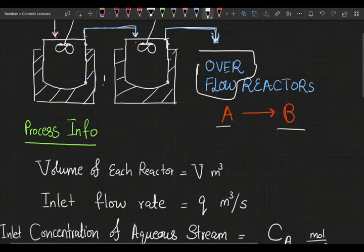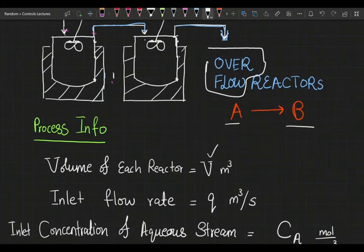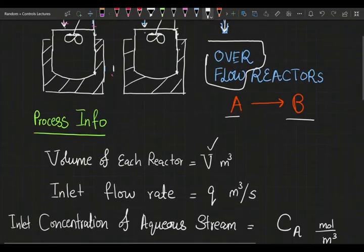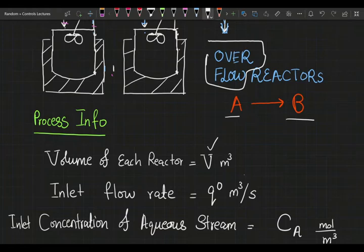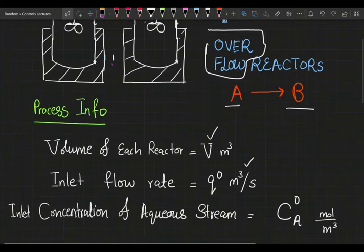We've been given both of these reactors have the same volume, and the volume of each reactor is V m³. The inlet flow rate, I'm going to label that as q sub zero, q superscript zero, is q meter cube per second. And the inlet concentration is C_A superscript zero.